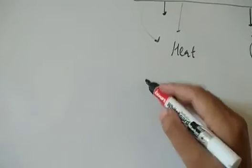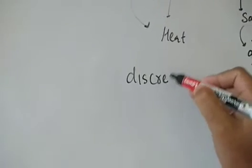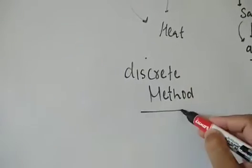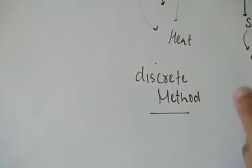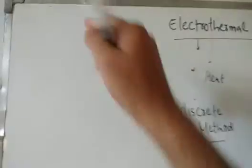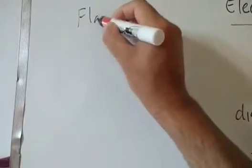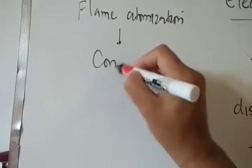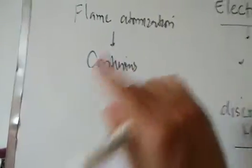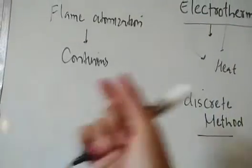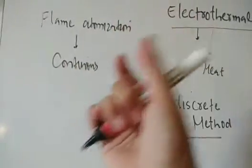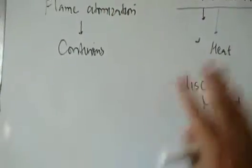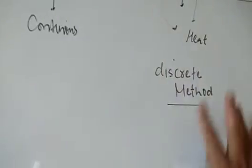This is a discrete method. Discrete method means during the process of atomization your sample is introduced in a discrete manner, not in a continuous manner. Contrary to this, flame atomization is a continuous method — in that case the sample is introduced continuously in the form of aerosols or fine mist into the atomization chamber. So the electrothermal method is a discrete method.